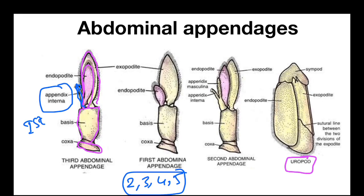The appendix interna of the second, third, fourth, and fifth abdominal appendages forms a structure called petasma, and this petasma is helpful to carry the fertilized eggs in prawns.